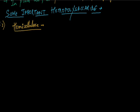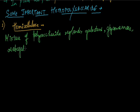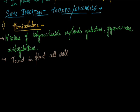The first one is hemicellulose. Hemicellulose is the mixture of polysaccharides: xylans, galactans, glucomannans and arabogalactans. It is found in plant cell wall along with cellulose.